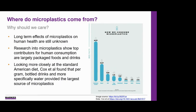But where do microplastics come from and why should we care about them? Long-term effects of microplastics on human health are still unknown, but research suggests there could be some impact to our endocrine systems, affecting hormones which regulate numerous processes within the body. Recent research shows top contributors to human consumption are largely related to packaged foods and drinks, including bottled drinks, tap water, seafood, sugar, salt, and honey, as shown in this infographic.